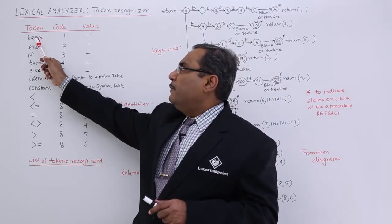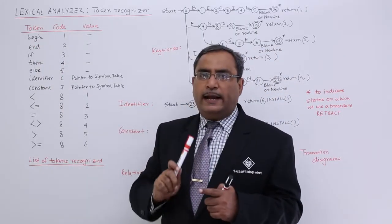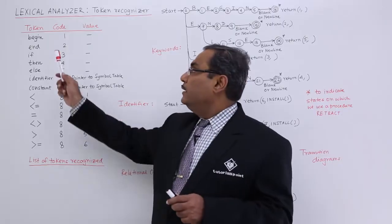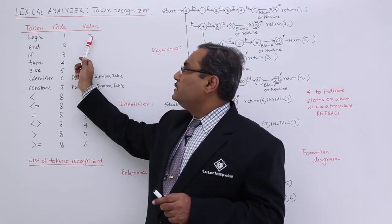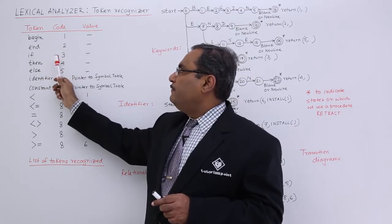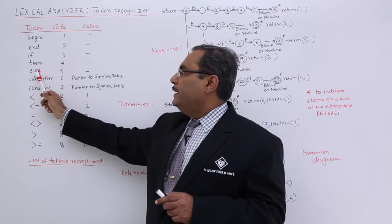If the lexical analyzer recognizes begin, then the code will be 1, value is void. End 2, if 3, then 4, else 5.